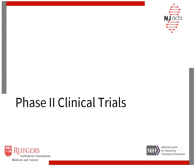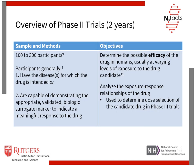Next, we will discuss phase 2 clinical trials. Phase 2 trials are slightly larger, with around 100 to 300 participants. An important distinction from phase 1 trials is that the subjects generally have the disease or diseases for which the drug is intended, or they are capable of demonstrating an appropriate validated biologic surrogate marker to indicate a meaningful response to the drug. The primary objective is to determine the efficacy of the drug in humans, usually at varying levels of exposure. Additionally, the exposure-response relationships of the drug are analyzed and used to determine dose selection of the candidate drug in phase 3 trials.